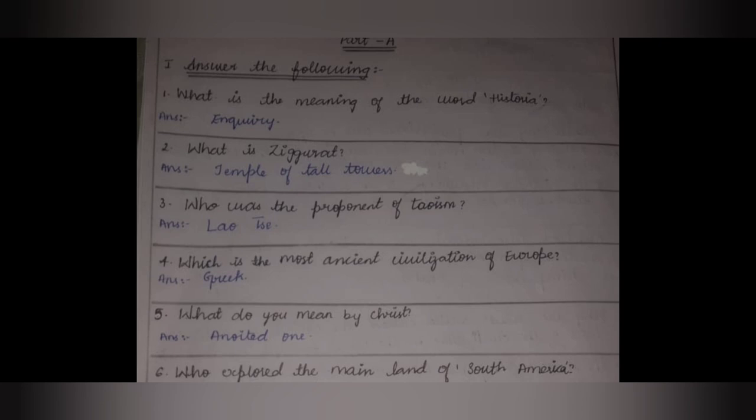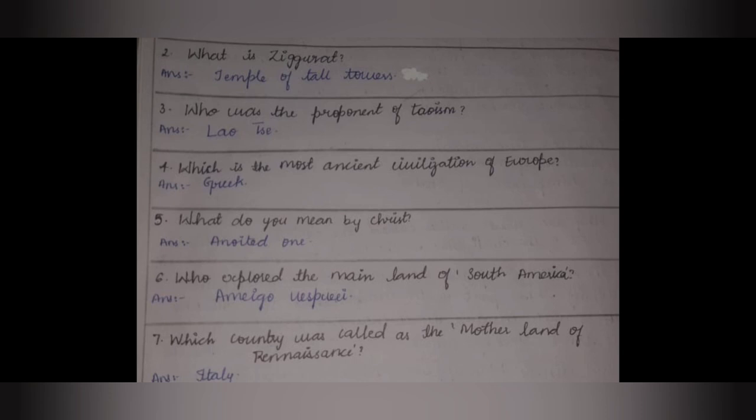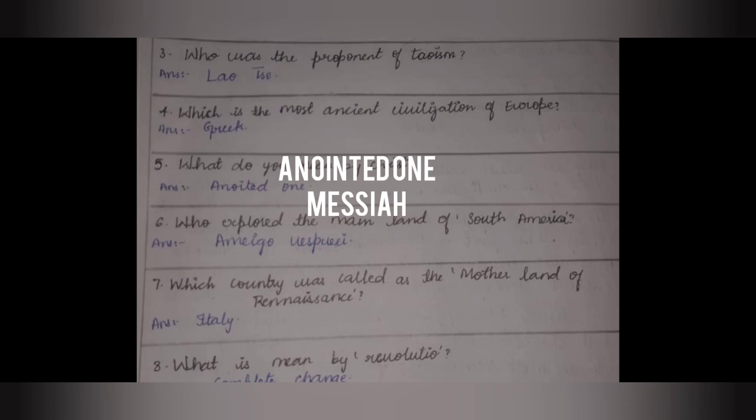What is the meaning of the word 'historia'? It is enquiry. What is a ziggurat? It is the temple of tall tower. Who was the proponent of Taoism? It is Lao Tse. Which is the most ancient civilization of Europe? It is Greek. What do you mean by Christ? It is anointed one. Who explored the mainland of South America? It is Amerigo Vespucci.